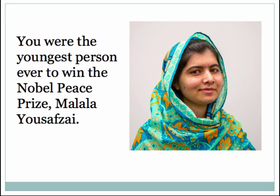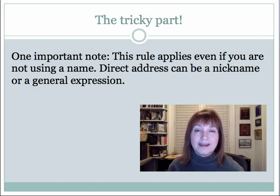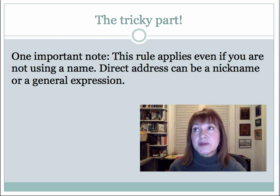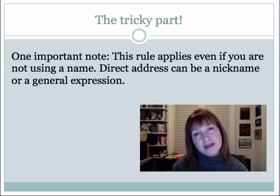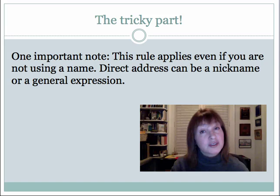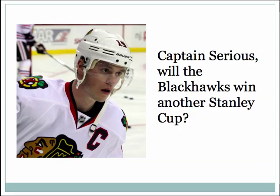Here's one more example: "You were the youngest person ever to win the Nobel Peace Prize, Malala Yousafzai." In this sentence, we have the direct address at the end of the sentence, so it needs a comma before it. Here's the tricky part: this rule applies even if you aren't using a name. Direct address can be a nickname or a general expression — it could be a nickname like Mom or Sweetie, or a general expression like Gentleman or Hey You. Any of those apply as direct address because someone or something is being spoken to directly, so you're going to need the commas.